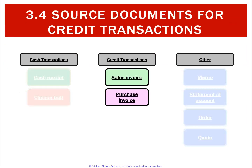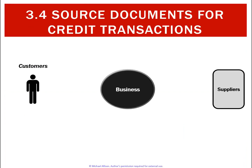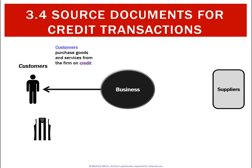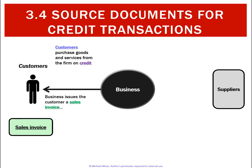Looking at source documents for credit transactions, there are two types: sales invoices and purchase invoices. Whether the business issues or receives the document determines which type it is. When the business is selling to a customer on credit, it gives the customer goods and also a sales invoice, because the business is the one making the sale, so it records that as a sales invoice.